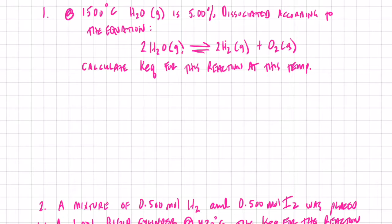The first one: we're going to take some water vapor, and it turns out that at 1500°C, five percent of it is dissociated according to this equation. So we can have water vapor and it can dissociate into hydrogen and oxygen gas if it gets hot enough. I want to find the equilibrium constant for this reaction at this temperature.